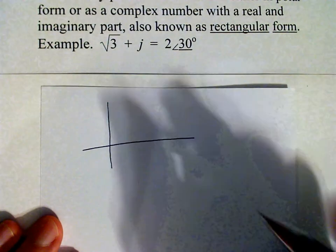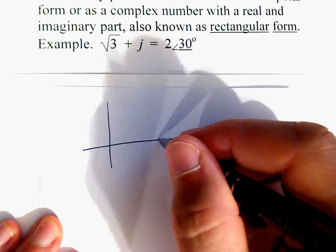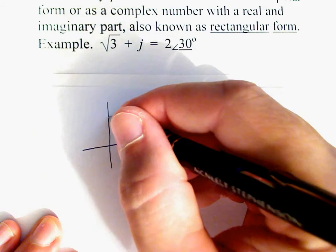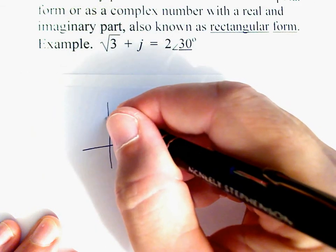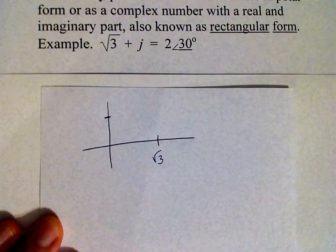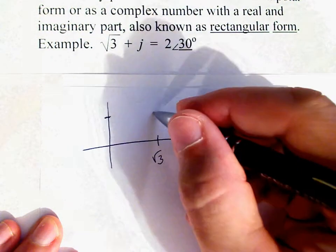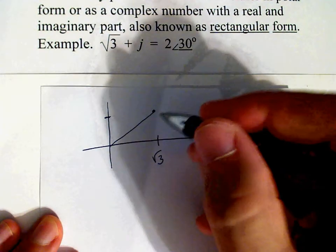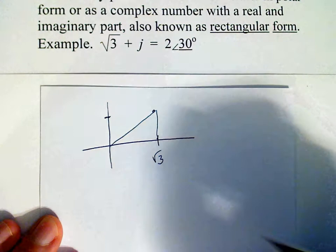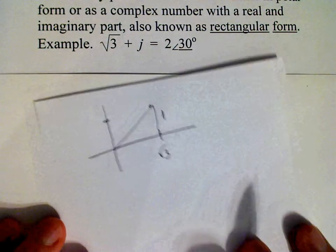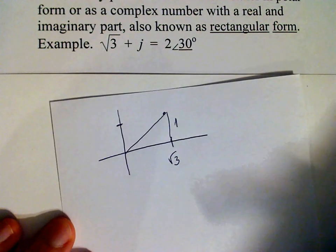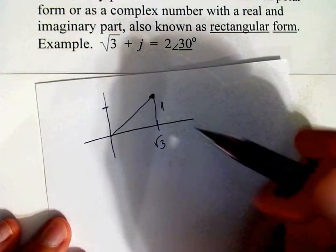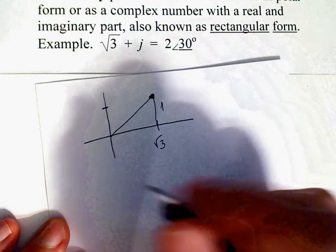In rectangular form I have √3 there and then j or 1 on the imaginary axis. That gives me a right triangle with legs √3 and 1. To find the hypotenuse of this right triangle we need to do square root sum of the squares.